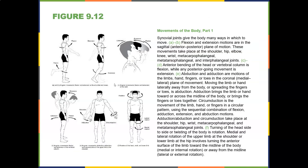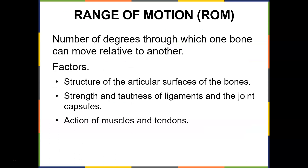These are examples of movements of the body. Range of motion is the number of degrees one bone can move relative to another. Factors that influence it include the structure of the articular surfaces, the strength and tautness of ligaments and the joint capsule, and the action of muscles and tendons.